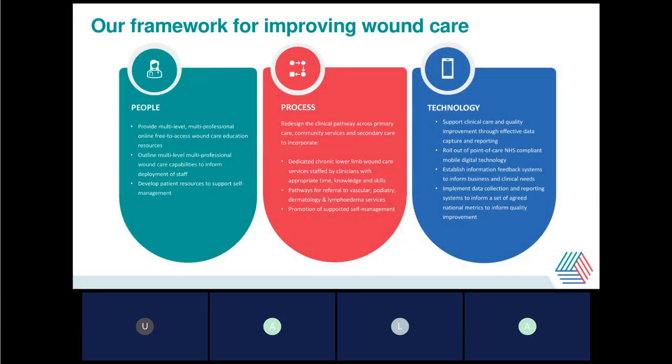We are a transformation programme following the framework of people, processes, and technology. If you want to improve wound care, you need to think about who your people are — who is delivering care, who needs to understand the basics of wound care and know what services are available locally, including the dedicated lower limb services we're recommending. There's something about upskilling your workforce, because we know many patients with wounds sit in the community — in community care, primary care, and social care.